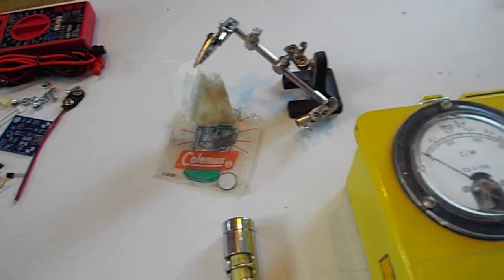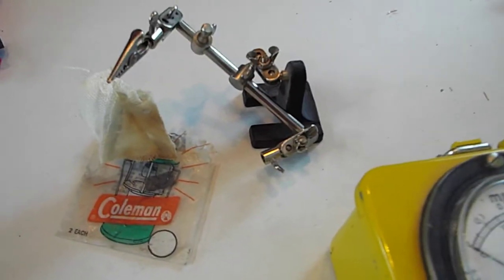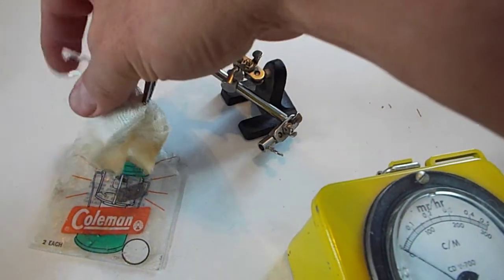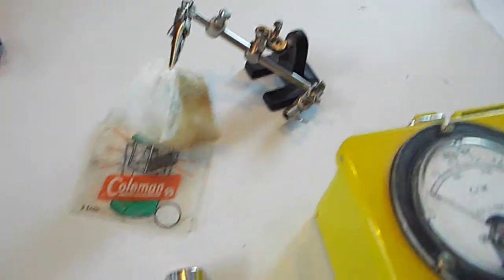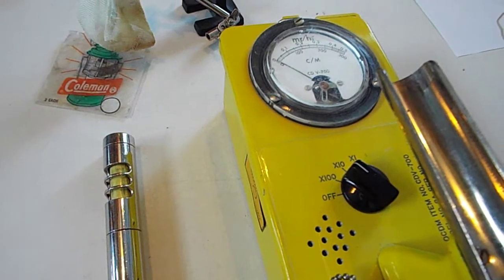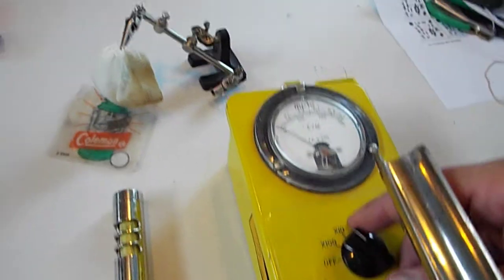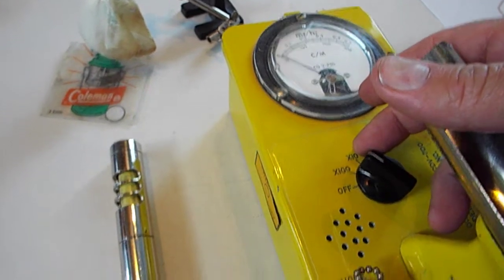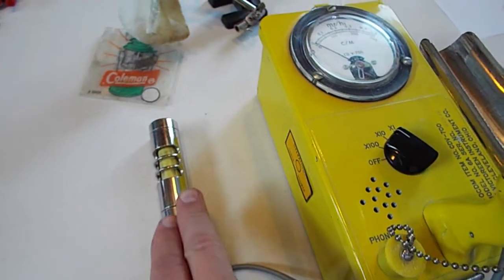Today I'm going to demonstrate using some thoriated lantern mantles from the 1990s. These are Coleman mantles - they're slightly radioactive. I have a CDV-700 to demonstrate their radiation output. We have this set on the 10x range, and the probe has the beta window open.